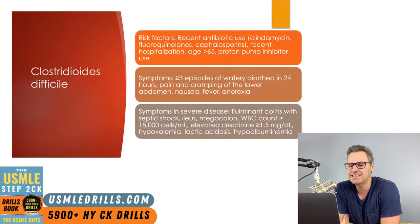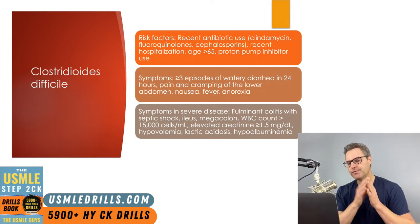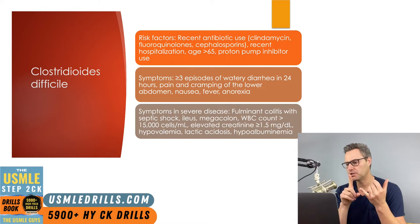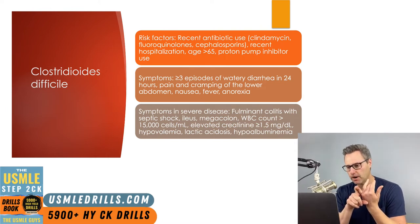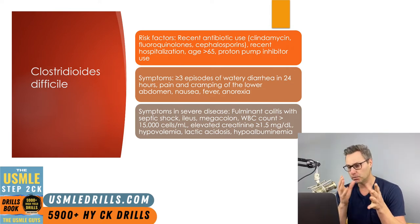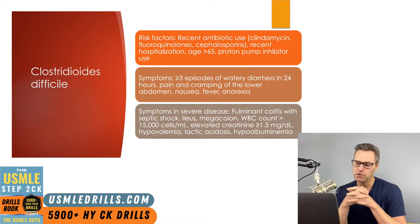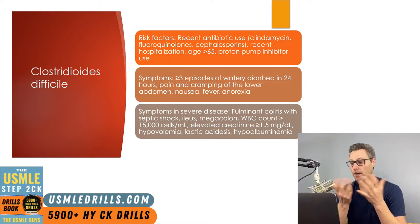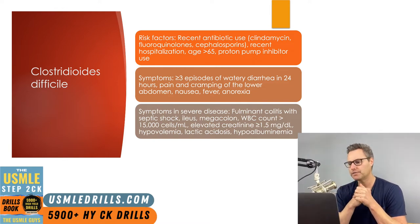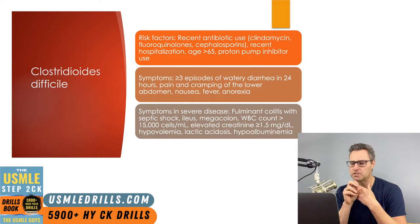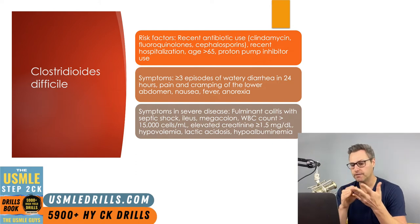Next up, we have C. difficile. This is a common hospital-acquired infection. Risk factors associated with the development of C. difficile include recent antibiotic use — a very important finding in a vignette — particularly if it was clindamycin, fluoroquinolones, or cephalosporins. Additionally, recent hospitalization or living in a long-term healthcare or rehab facility are all risk factors. Those 65 years of age or older are at greater risk, as they are often living in such facilities. One final risk factor is anyone using a proton pump inhibitor. Symptoms include three or more episodes of watery diarrhea in a 24-hour period, pain and cramping in the lower abdomen, nausea, fever, and anorexia.